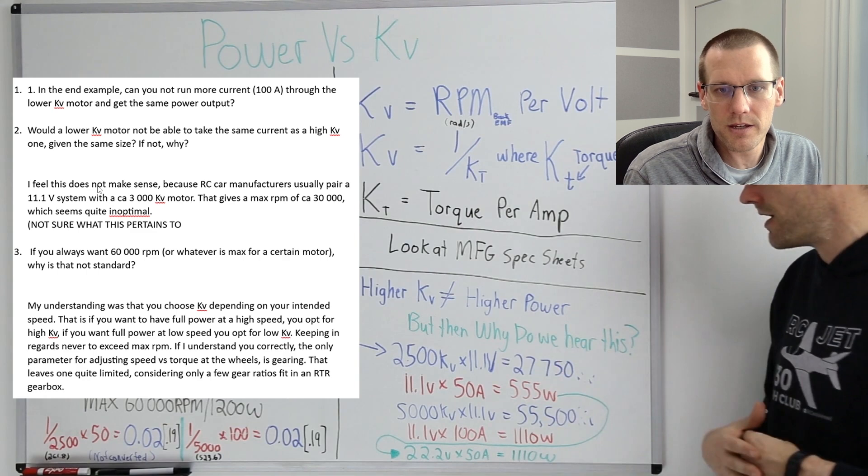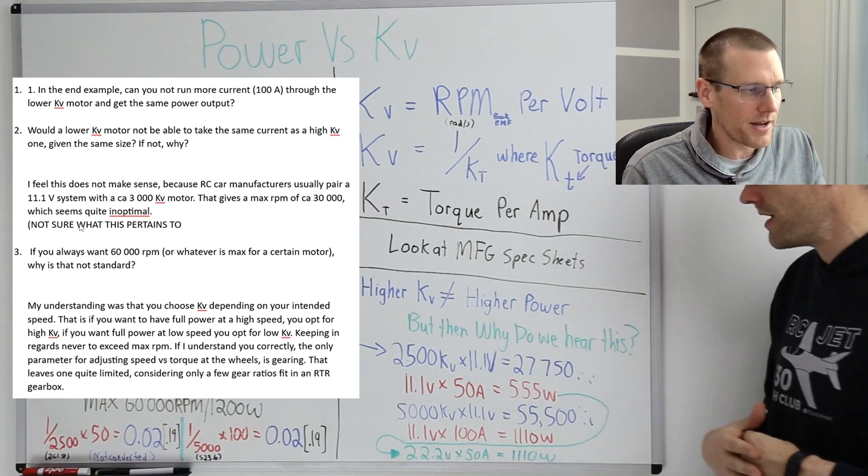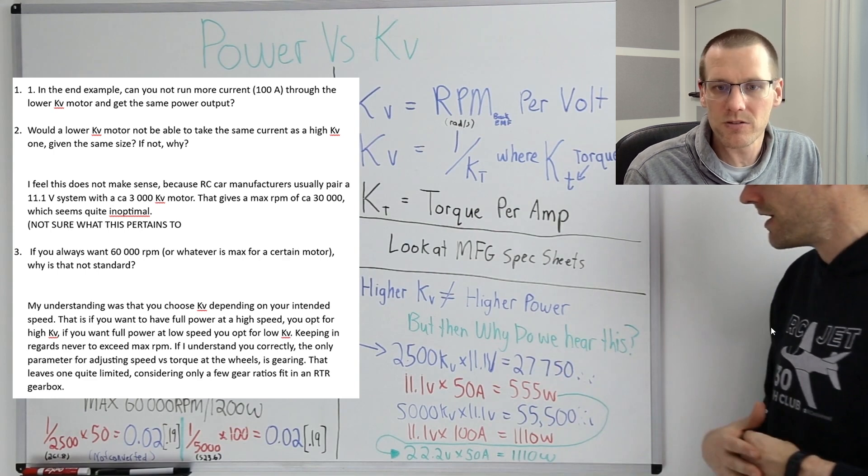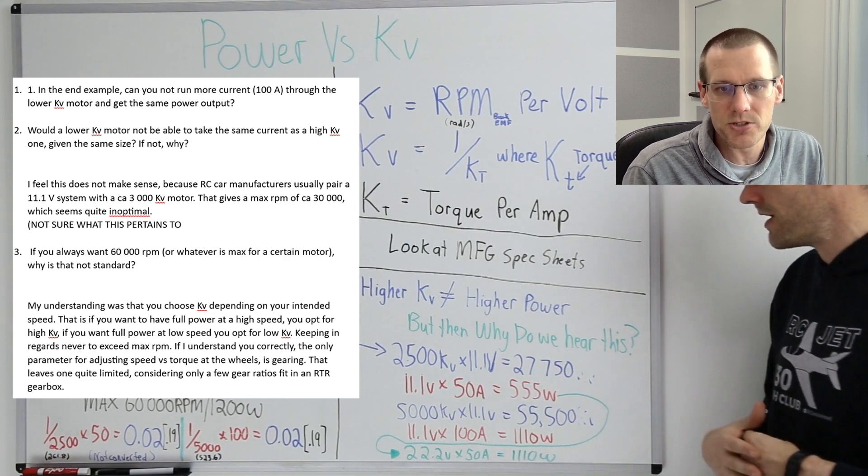Let's now take a look at this third question, then I'm going to jump into this section above it. So if you always want 60,000 RPM, because that's what I talk about a lot here, the max of 60,000 RPM, you can actually see that right here and we'll get to the reason why here shortly. So if you always want 60,000 RPM or whatever that max is for a certain motor, why is that not a standard?